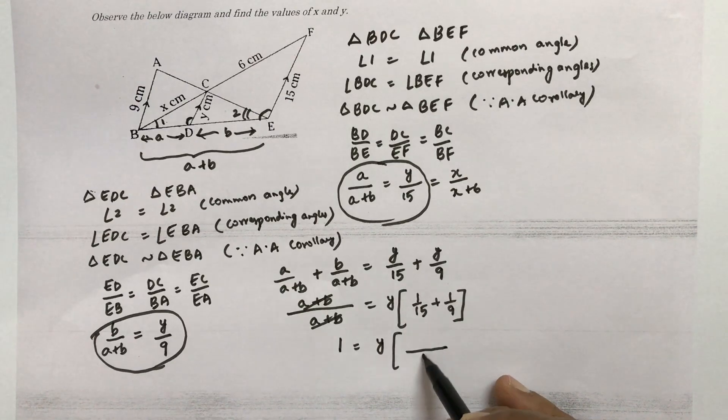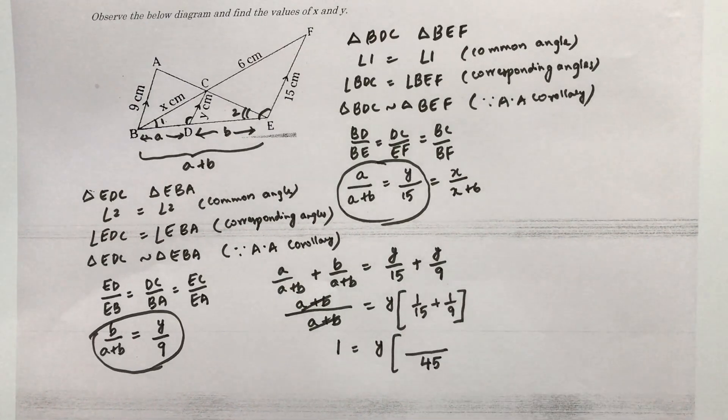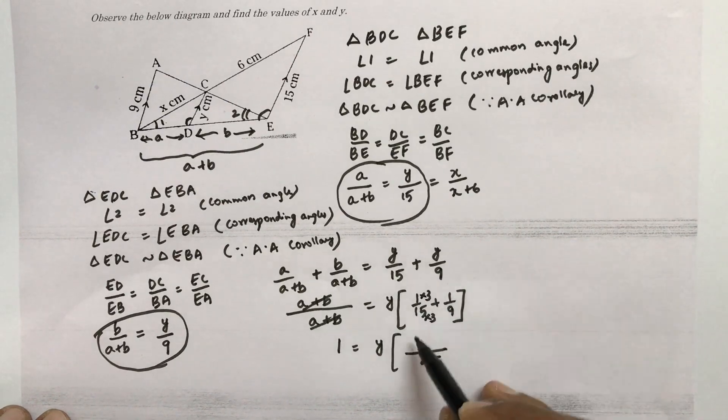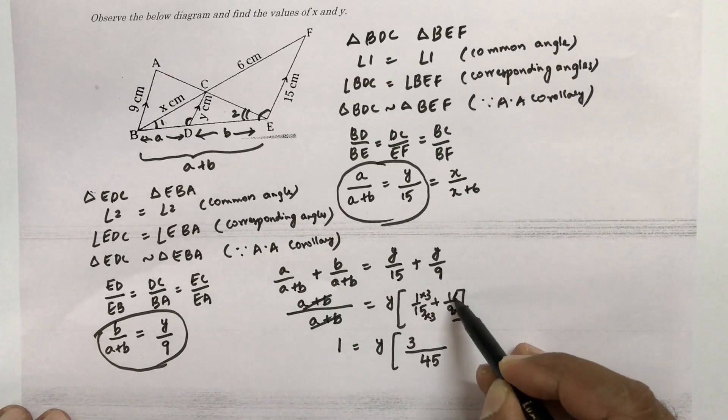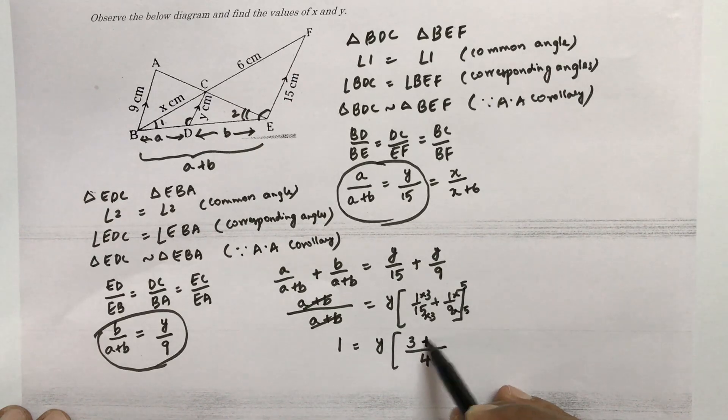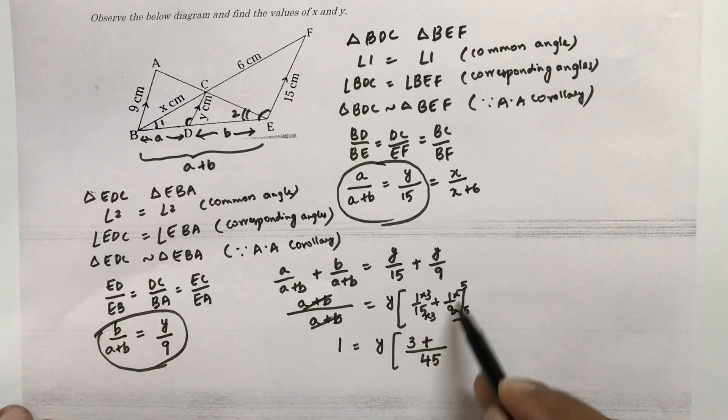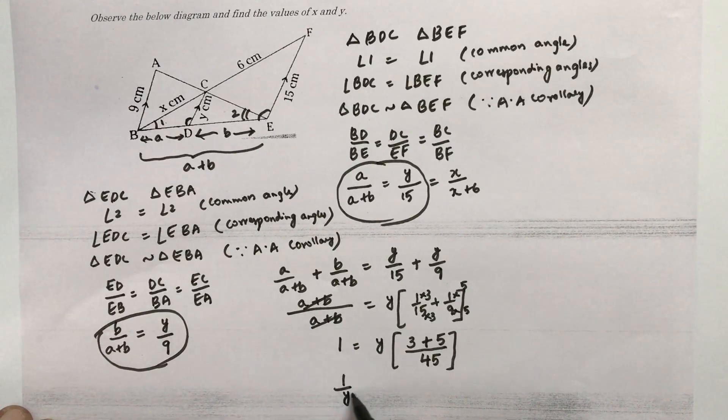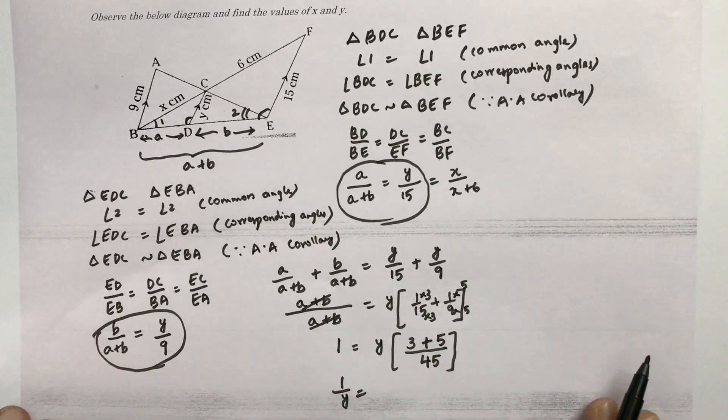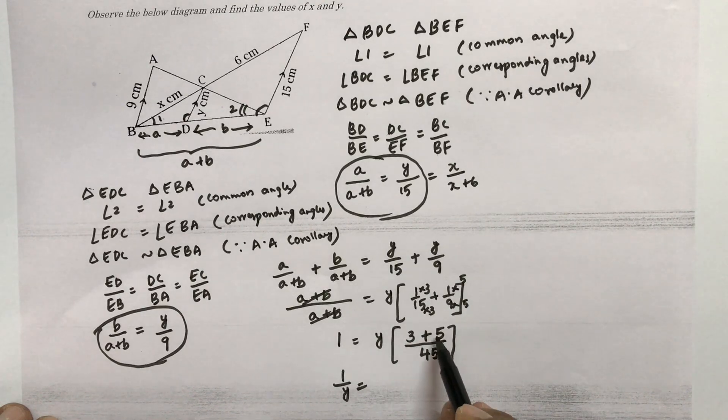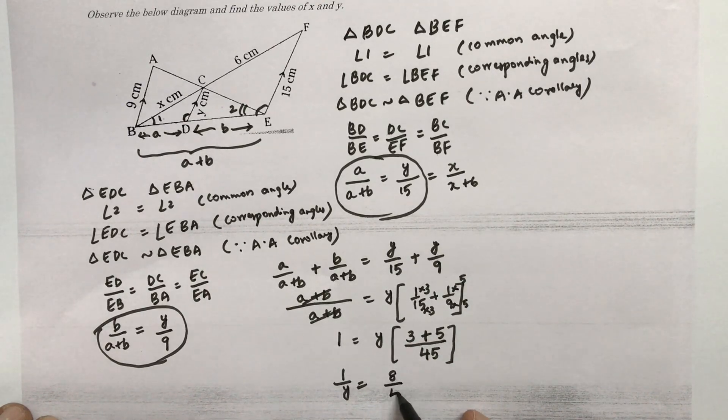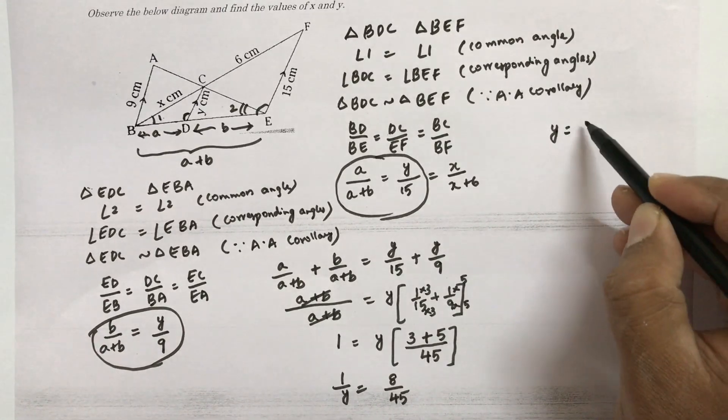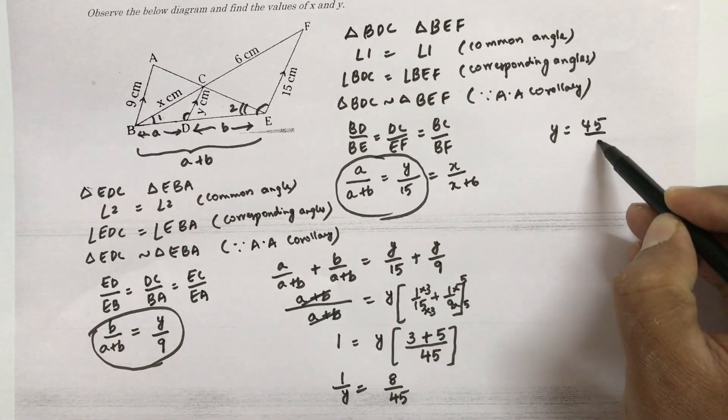So it is 1 equals Y. In this if we take LCM, 15 and 9 LCM is 45. So here to get 45 into 3 into 3. Here to make it 45 into 5 into 5. So 1 into 3 is 3 plus 1 into 5 is 5. So 1 by Y. This Y will transform. That is 3 plus 5 is 8 by 45. Therefore, we got the value of Y. Y is nothing but 45 by 8.